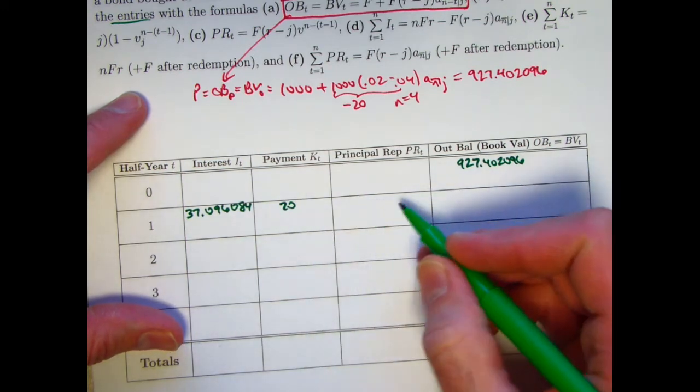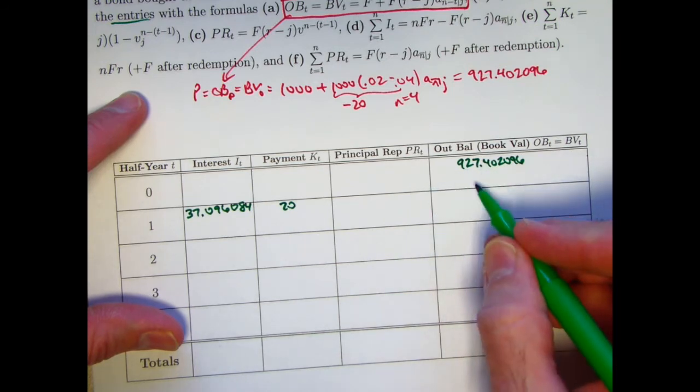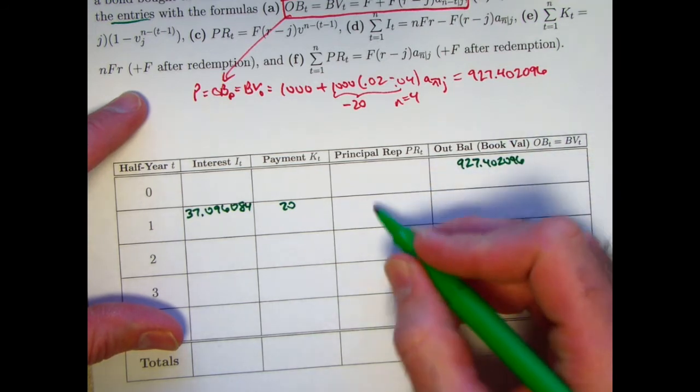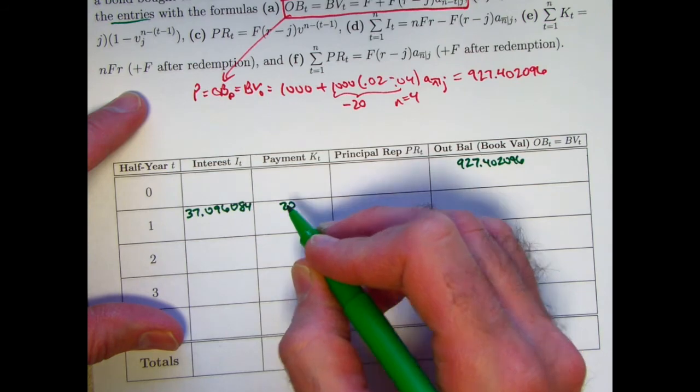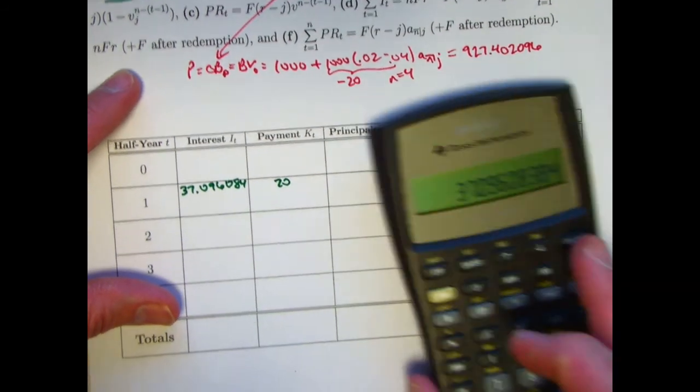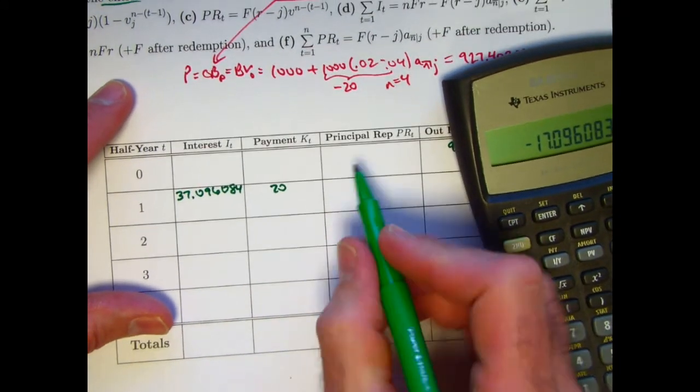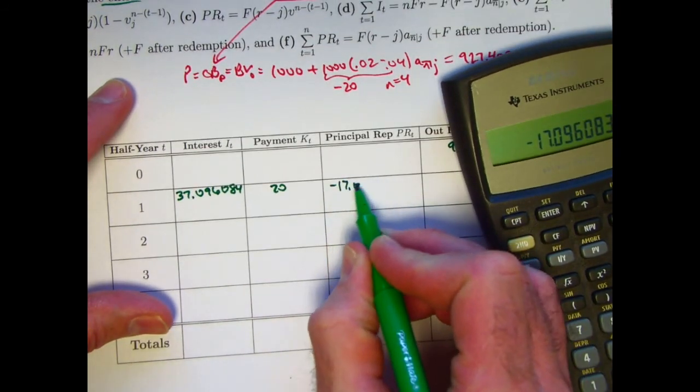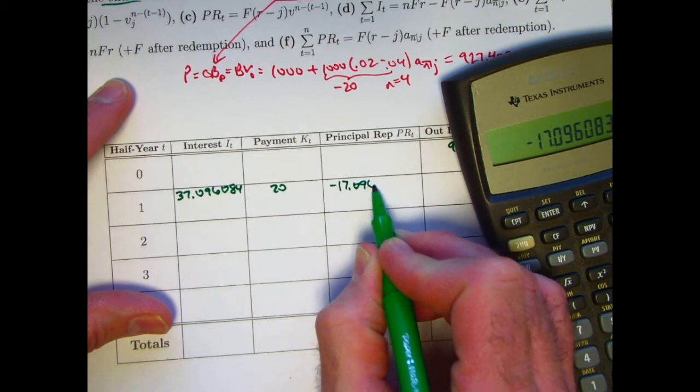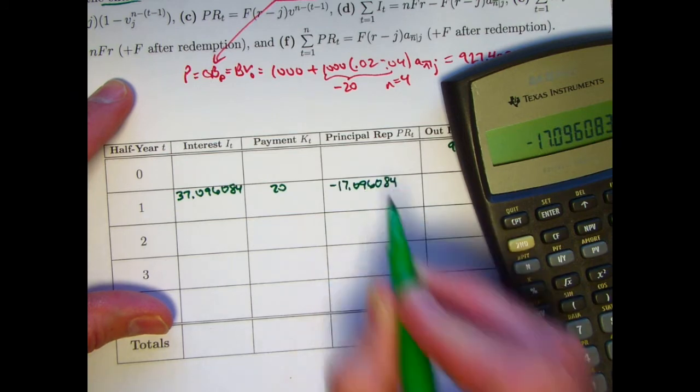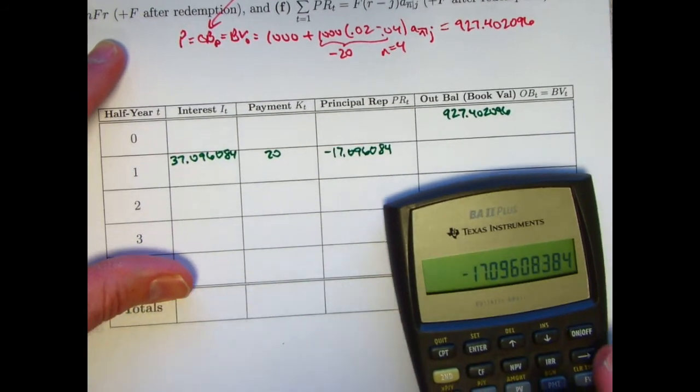Your principal repaid, then, will make this balance go up. If I want to use the same formula, I should think of it as a negative quantity. I should still think of it as the payment minus the interest. So subtract this amount from 20 to get a negative number. Negative 17.096084.